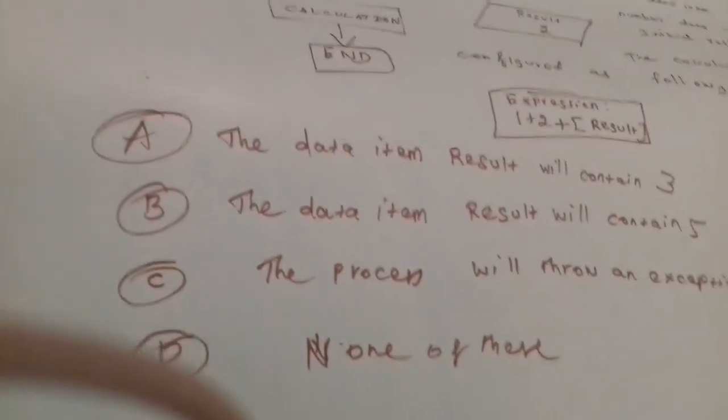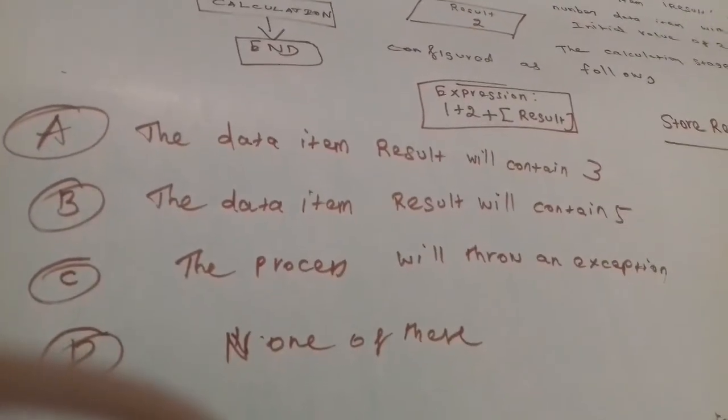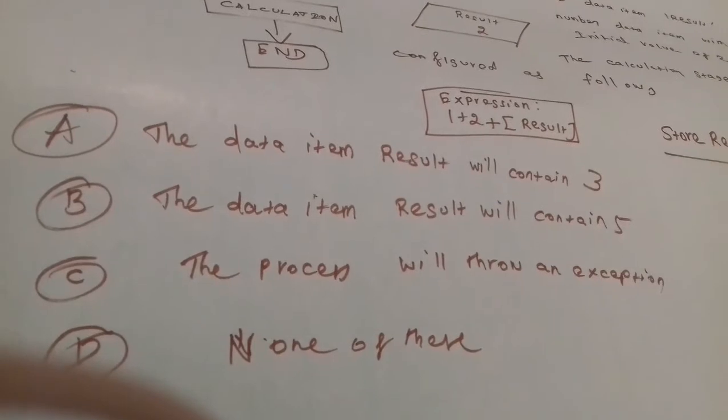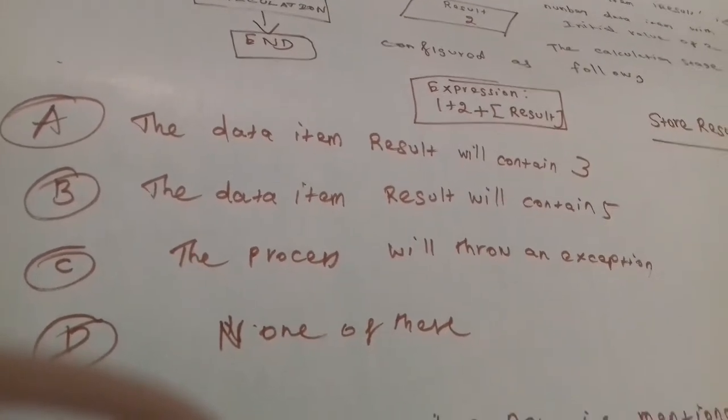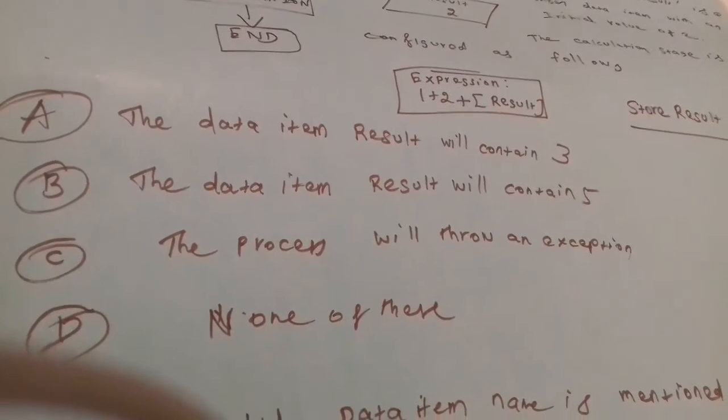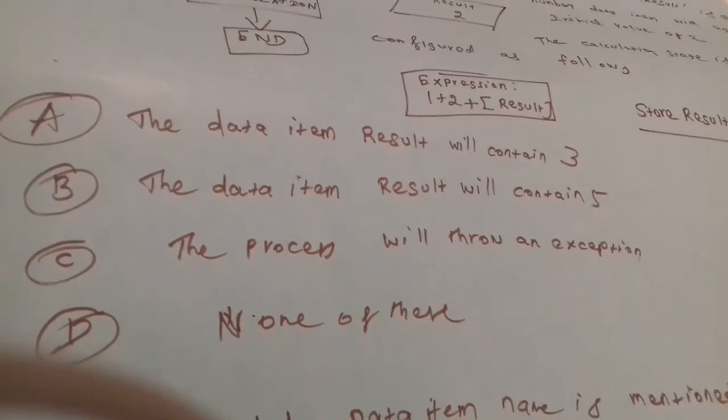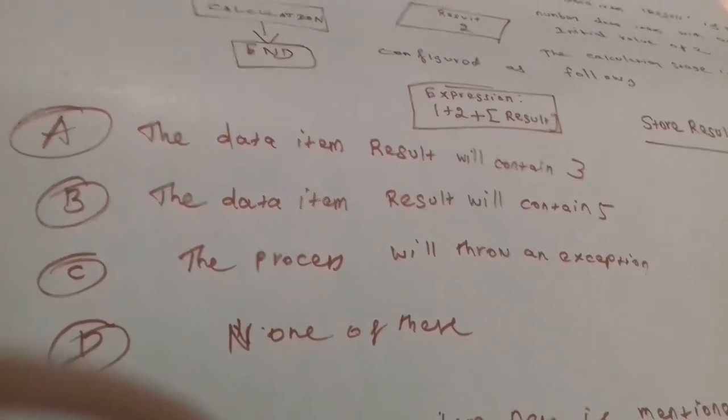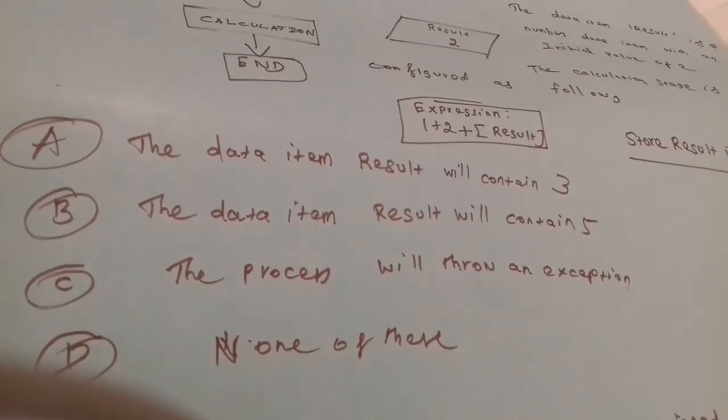Option A: the data item result will contain 3. Option B: the data item result will contain 5 from the expression 1 + 2 + result.